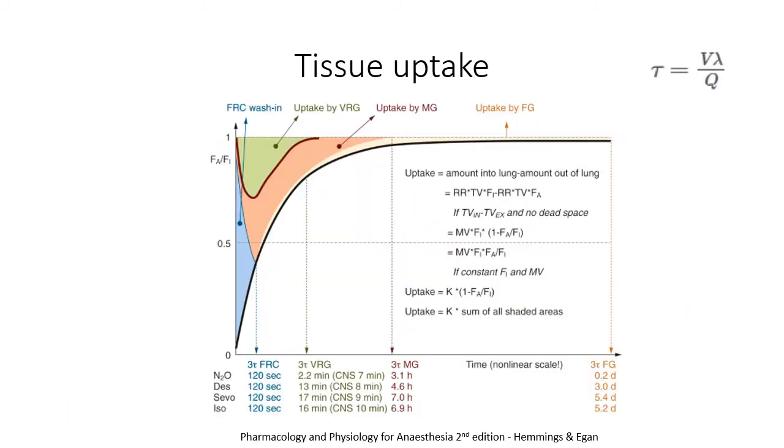The second thing I'd like to draw your attention to is drug uptake itself. This is another graph taken from Hemmings and Egan. The blue represents the functional residual capacity. The green represents the vessel-rich group, which is analogous to the central compartment.